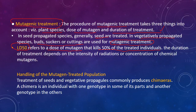The duration of treatment depends on the intensity of radiation — greater intensity means shorter duration — as well as the concentration of chemical mutagens. Step four: handling of the mutagen-treated population. After treatment, seeds and vegetative propagules produce an unstable structure called a chimera — an individual with one genotype in one part and another genotype in another part, possibly having three different genotypes in a single individual.